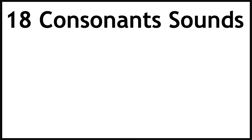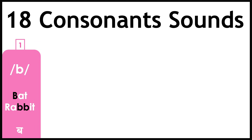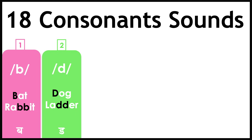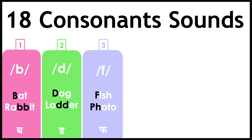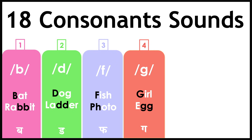Now let's look at all the eighteen consonant sounds: /b/ — bat, rabbit; /d/ — dog, bladder; /f/ — fish, photo; /g/ — girl, egg; /h/ — hat, who; /dʒ/ — juice, giraffe; /k/ — kite, school.